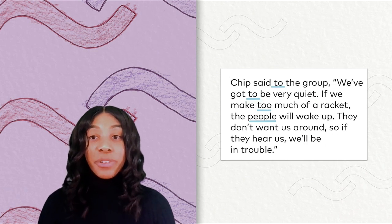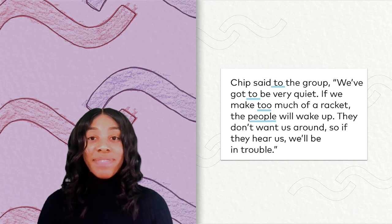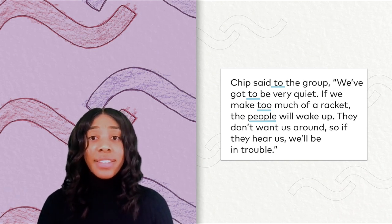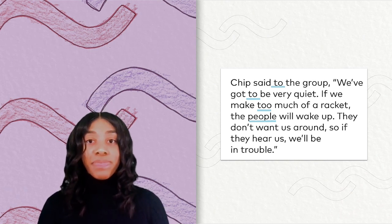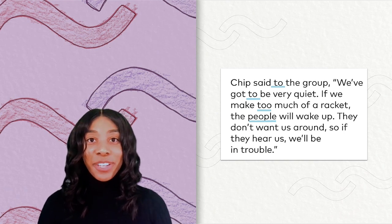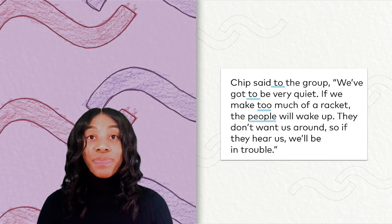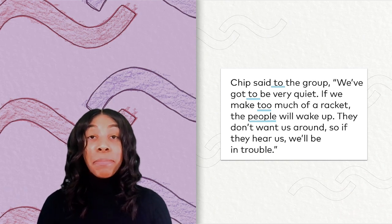Chip said to the group, 'We've got to be very quiet. If we make too much of a racket, the people will wake up. They don't want us around, so if they hear us, we'll be in trouble.' We have four high-frequency words on this page: to, too, to, and people.